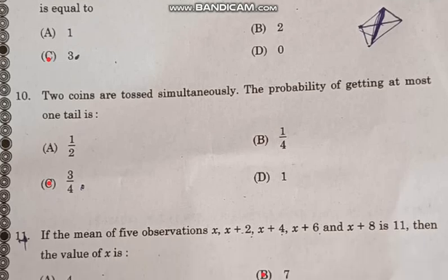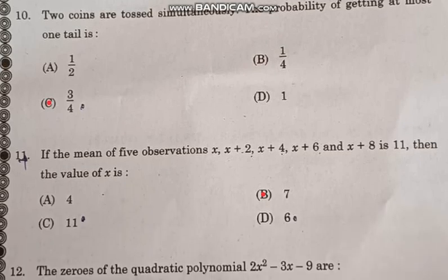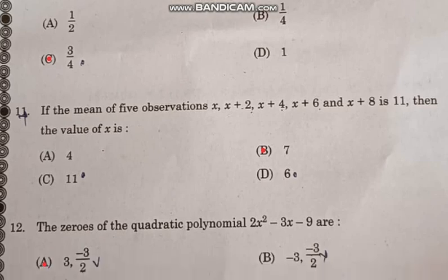Question number 10: Two coins are tossed simultaneously. The probability of getting at most one tail is correct answer option C, 3 by 4.